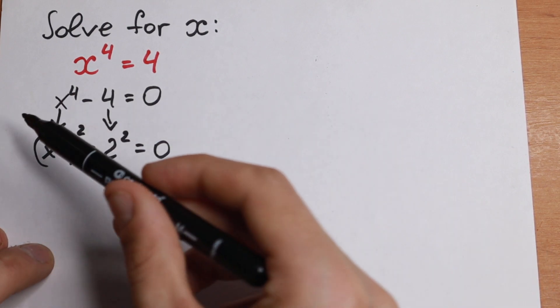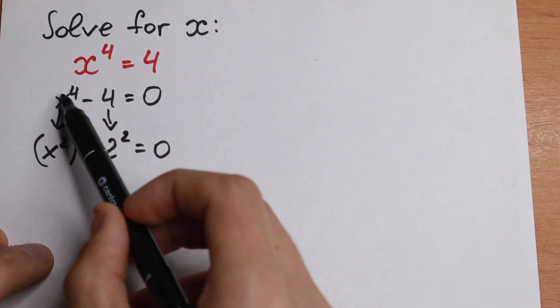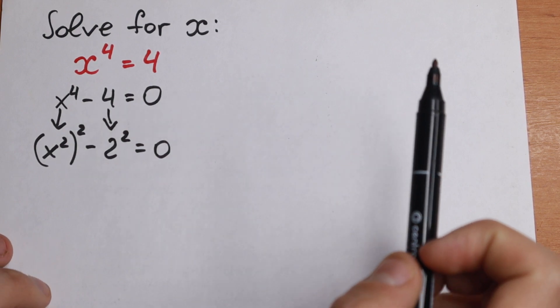So as you can see I just changed nothing. I just write this x to the fourth power as x squared to the second power. If we raise it we will have the same. And if we raise 2 to the second power we will have 4. So nothing changed.